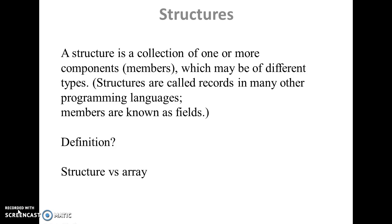We all know what an array is — an array is a collection of one or more elements of a similar data type, where all elements should be of integer type, float type, or character type. But if you want to store individual elements belonging to different data types, then we need to go for a structure.